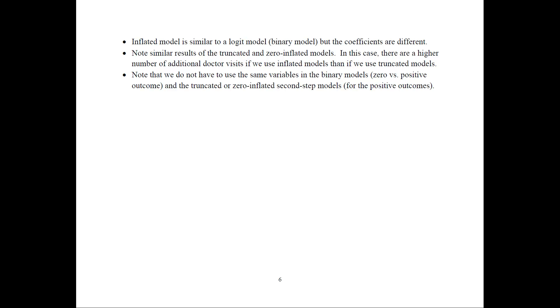To summarize the key points: the negative binomial should be preferred when over-dispersion is present; the two-step and one-step models gave very similar results in this example; and you do not need to use the same variables in the binary model and the second-step count model in either truncated or zero-inflated frameworks. Keep that flexibility in mind for your own study. Now let's go ahead and look at the different programs that would estimate these models.